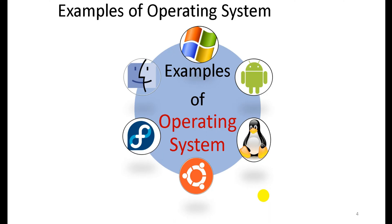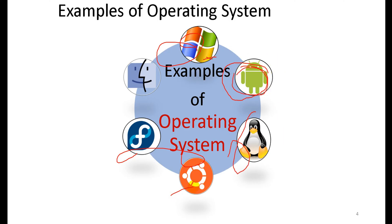Examples of operating systems that are common and familiar: Windows (for example, Windows XP) is used on computers; Android is used on smartphones; and Linux-based systems such as Ubuntu and Fedora are also common examples of operating systems.